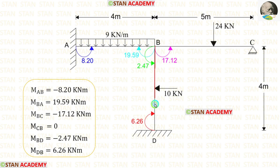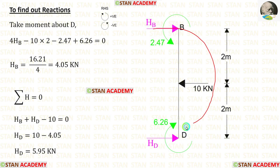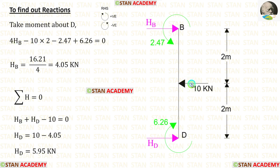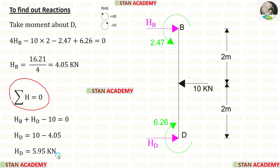For column BD, there are two moments: MBD acting anti-clockwise and MDB acting clockwise. Taking moments about D to find HB — HB acts clockwise over 4 meters, the 10 kN point load acts anti-clockwise over 2 meters, MBD is negative (anti-clockwise) and MDB is positive (clockwise). We obtain HB. Applying ΣH = 0, we find HD.